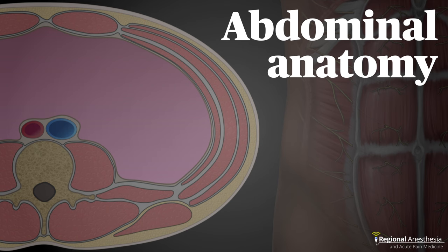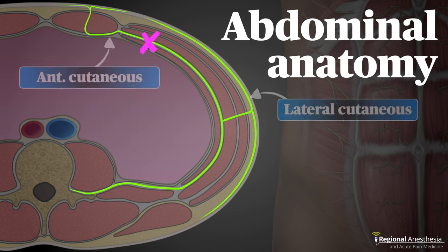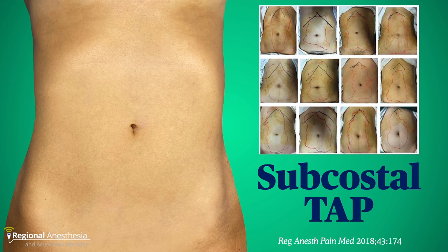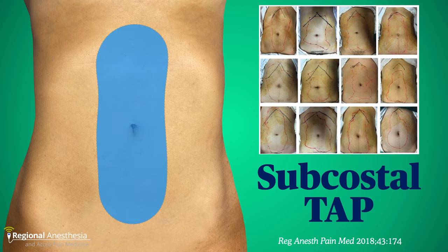Now that all sounds great, but there's a problem. What we've just described targets the anterior cutaneous branches of the upper abdominal intercostal nerves, but doesn't block the lateral cutaneous branches. So it's not surprising that the pattern of sensory blockade is more or less a flat midline strip — it's essentially a different approach to the rectus sheath block. Importantly, these lateral areas are not blocked, and while that may be okay for some epigastric incisions, there are indications where you do need that lateral coverage.